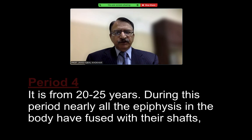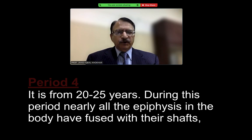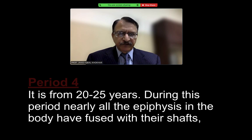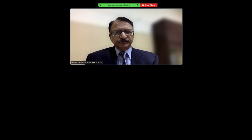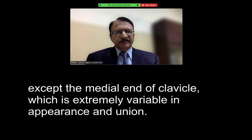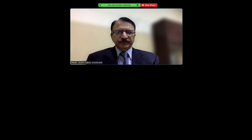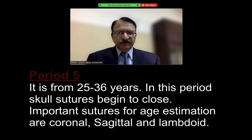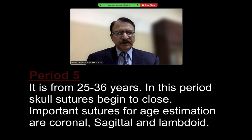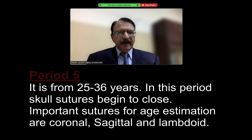In period four, from age 20 to 25 years, nearly all the epiphyses in the body have fused with their respective shafts, except the medial end of the clavicle, which is extremely variable in appearance and union. Then period five, from age 25 to 36 years — in this period the skull sutures begin to close, with fusion proceeding from endocranial to ectocranial. Important landmarks include the sagittal suture, the coronal suture, and the lambdoid suture.